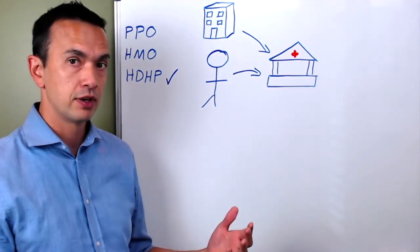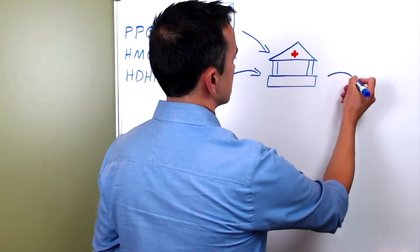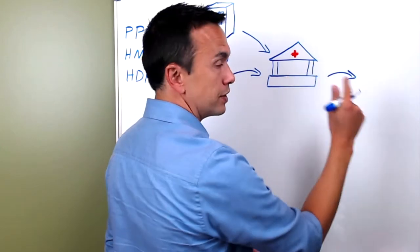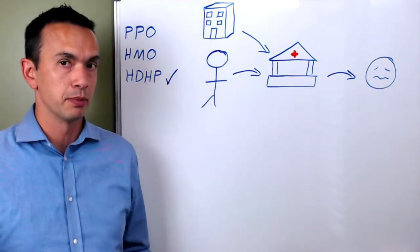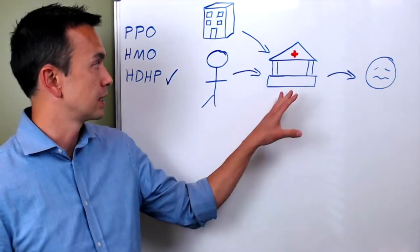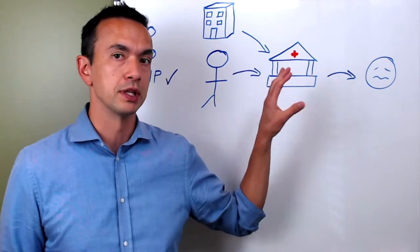You put money into the HSA and you're saving it for medical expenses. Then whenever you need to use it for medical expenses, you pull it out of this account. So all this stuff seems pretty straightforward. So really, what's so special about this? Well, the thing that's great about this is the way that the money is treated from a tax perspective.